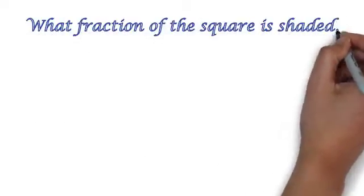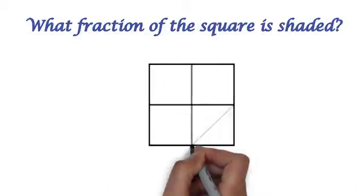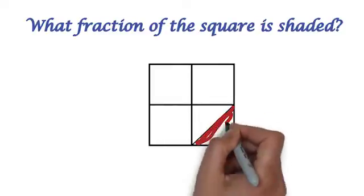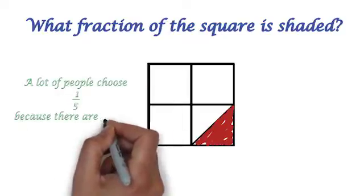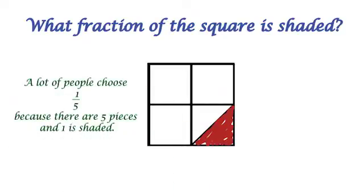So you answer the question what fraction of that square is shaded and we give this to lots of people and answers that are common. A lot of people will choose one fifth because there are five pieces and one of them is shaded.